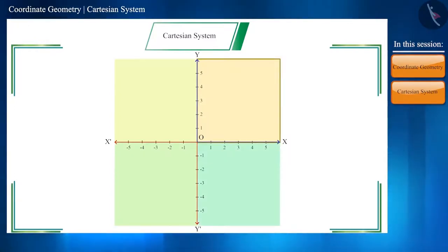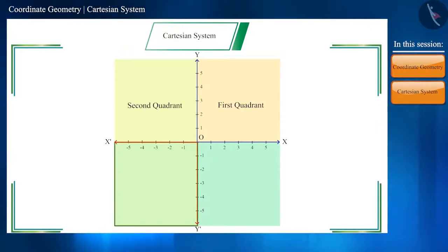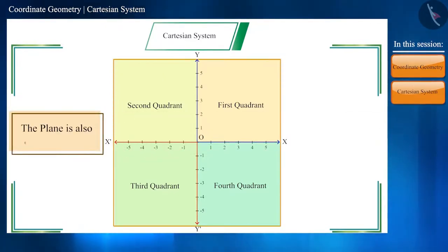The first part is called first quadrant, second part is second quadrant, third part is third quadrant, and fourth part is called fourth quadrant. And the plane is also called the x-y plane.